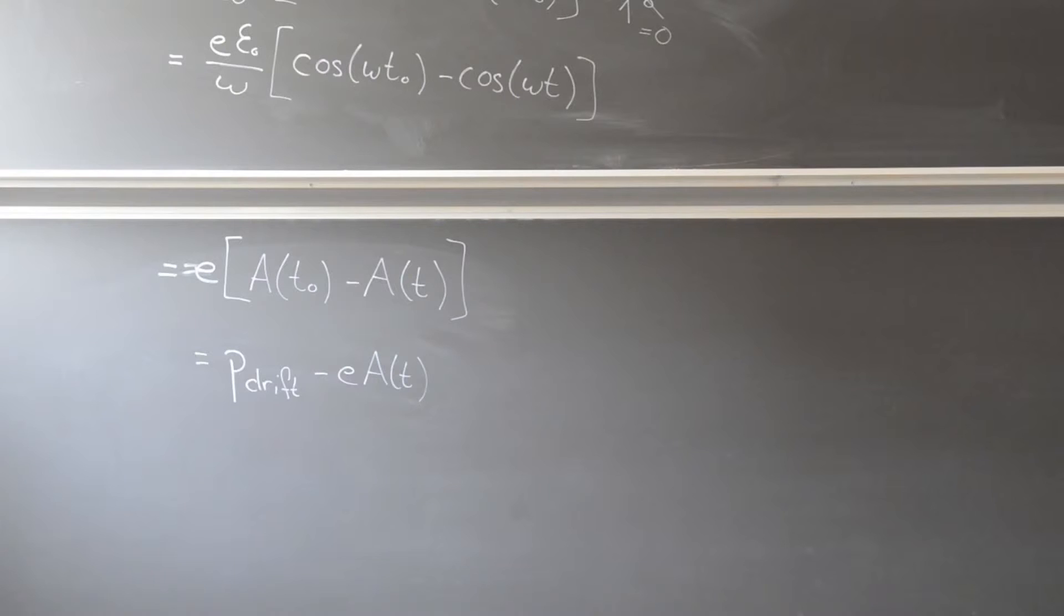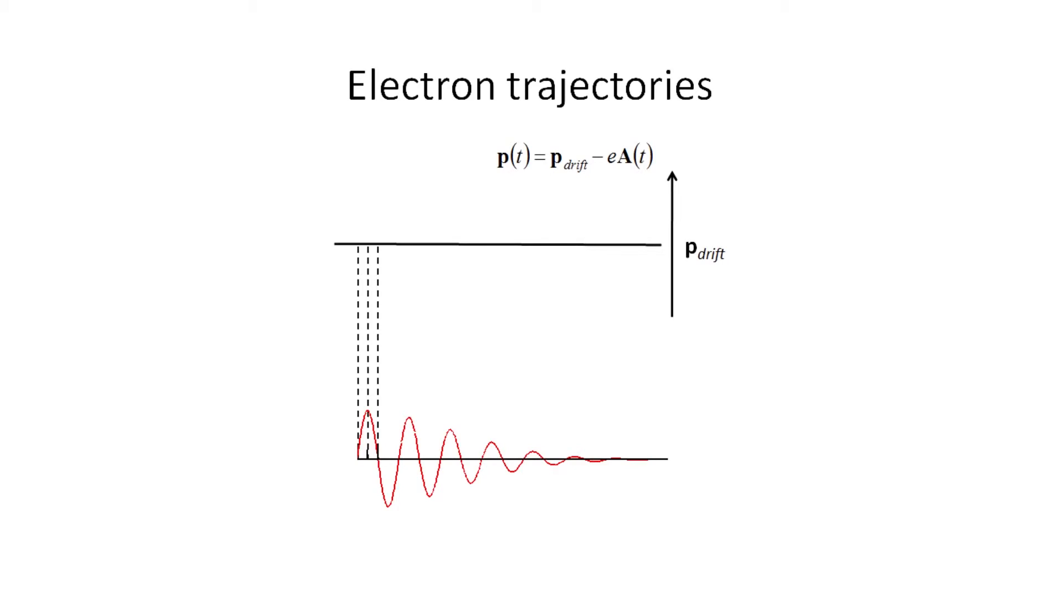This is the basic concept of attosecond streaking, which is another movie. But here we see three different trajectories. Depending on when the electron is born in the laser field, it will wiggle around as long as the laser field is on, and eventually it will end up with a drift momentum that depends on the initial timing.